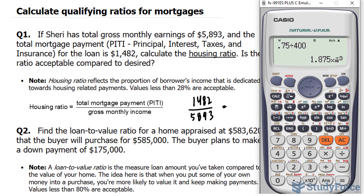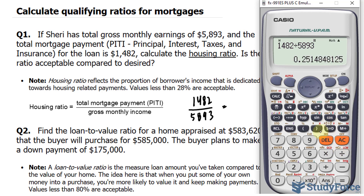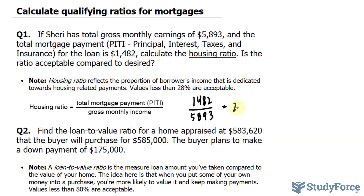Let's see if this is less than 28%. If I divide these two, I end up with a decimal amount. Multiplying by 100 to get it as a percentage, we have 25.14%. So this would be seen as something favorable from a lender's perspective.